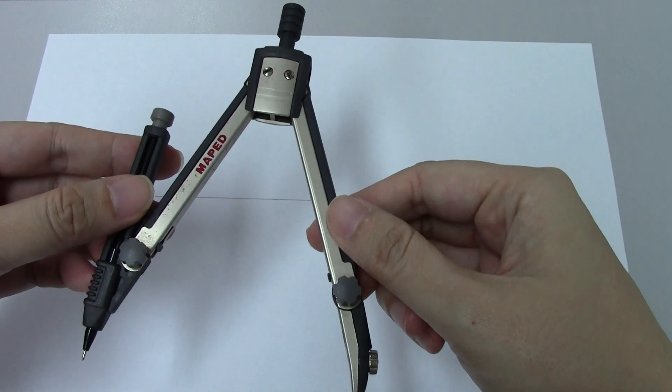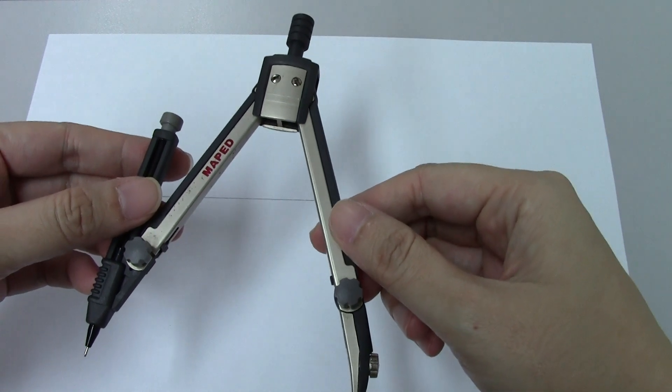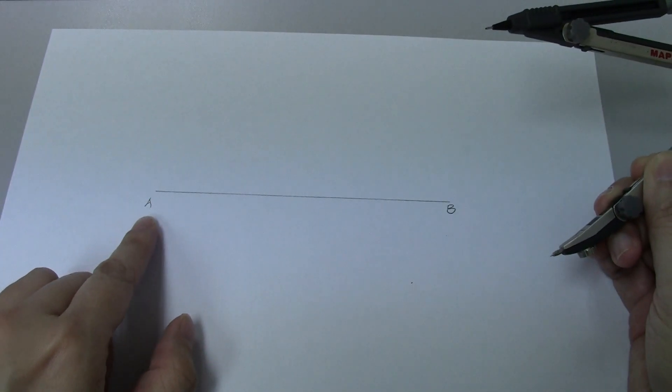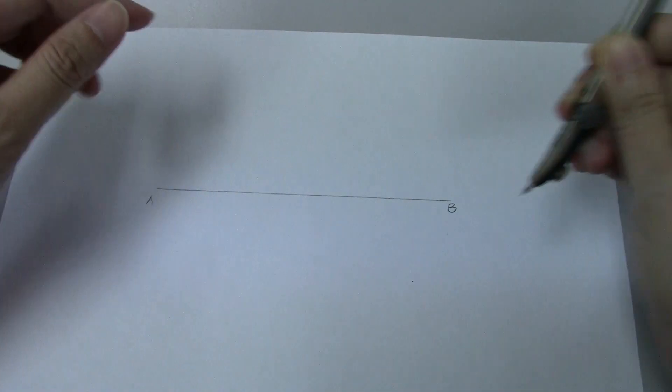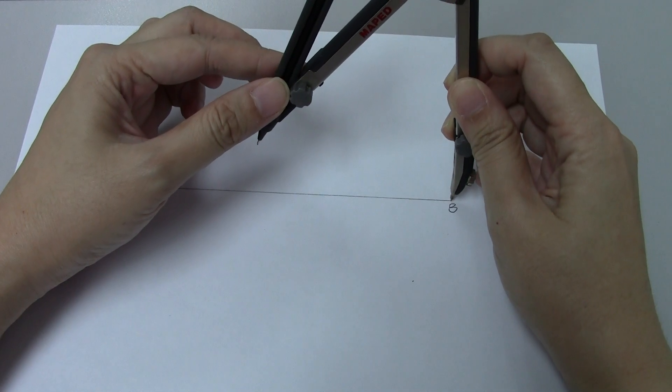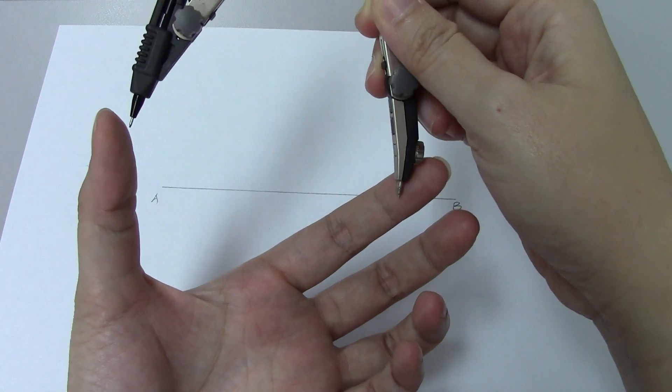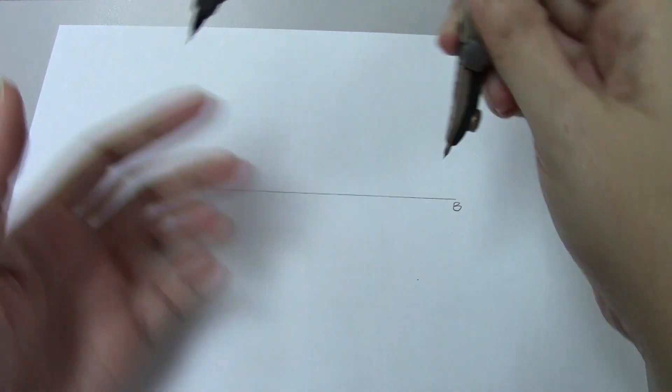Let's take a look at step one. You need to adjust your compass to slightly more than half of the line that you're bisecting. So right now, we have this line called A, B. I'm going to do a little bit of estimation. So the width I have already adjusted to slightly more than half.